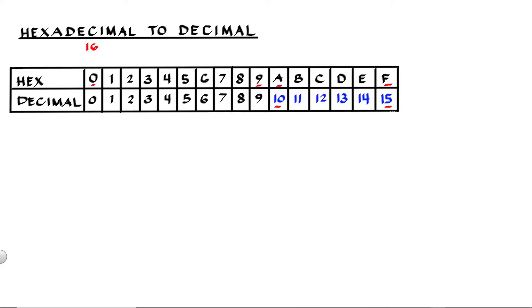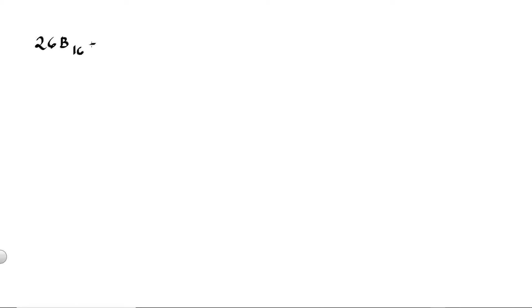Decimal is a positional number system with a base of 10, using digits from 0 to 9. For our example, let's convert 26B hex into decimal.